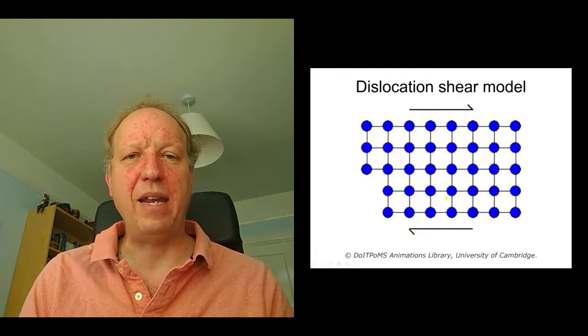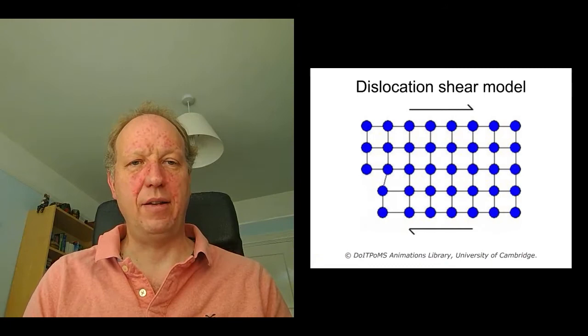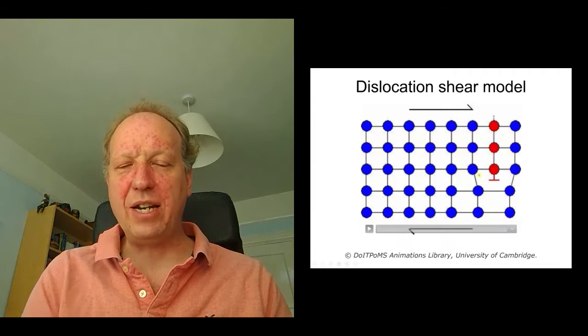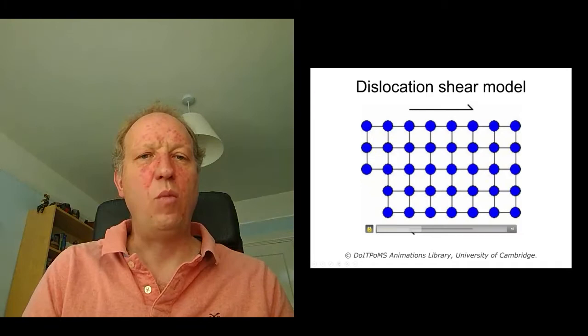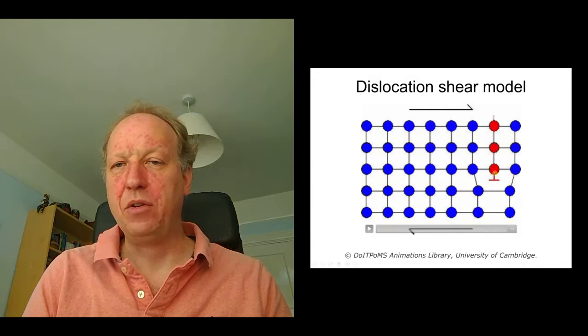It takes a little while to start. Here we go. Now you can see here's the dislocation. Here's the extra row of atoms. And you can see, actually, as this extra row of atoms propagates across the material, we only have to break one row of bonds at a time, not the entire set between these two planes.